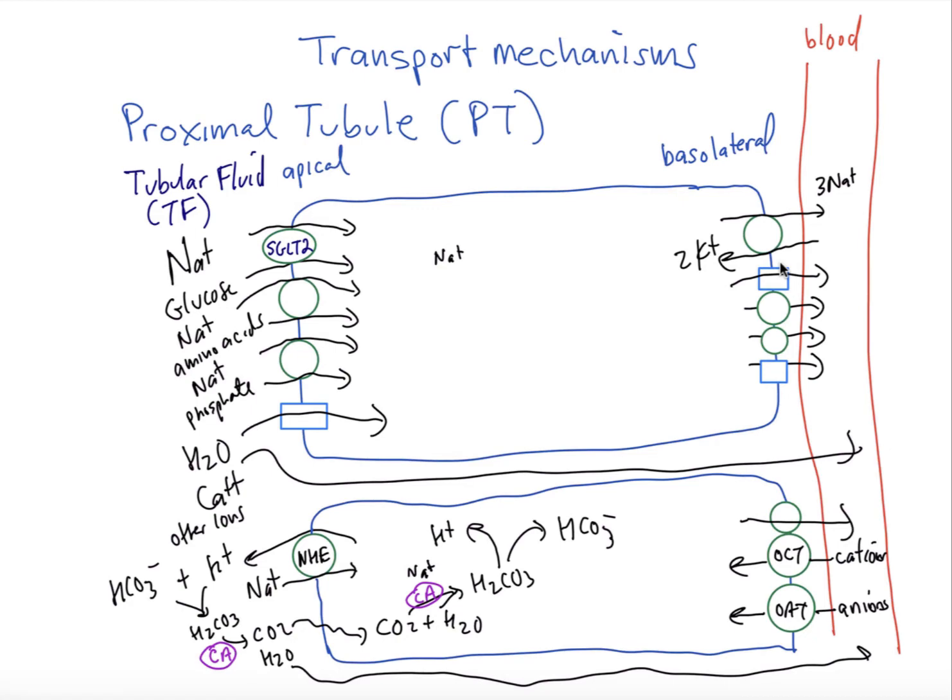This is a mechanism of getting filtered bicarbonate that was in the tubular fluid and into the blood. It doesn't happen directly. You have to go through this pathway to get the bicarbonate to then go out again on the basolateral side.